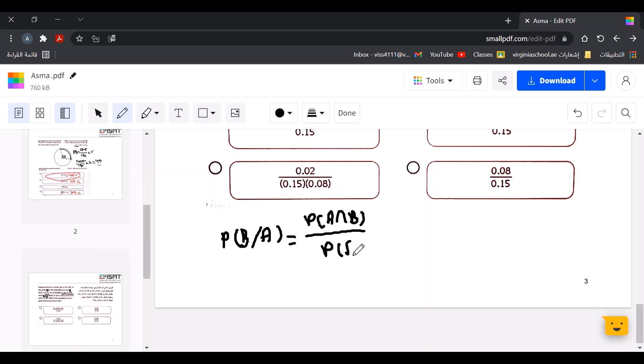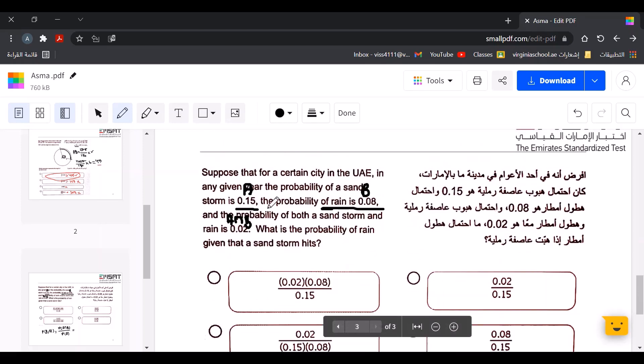We just need to replace the numbers here in the formula. As we solved here, we can see that 0.15 is A, and 0.08 is B, and A and B is 0.02.